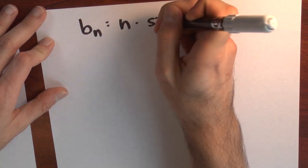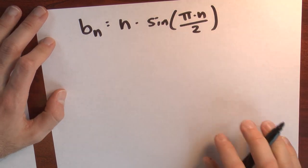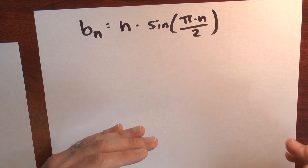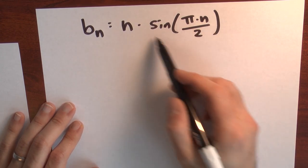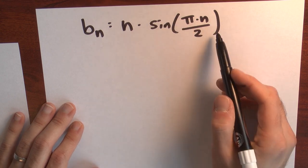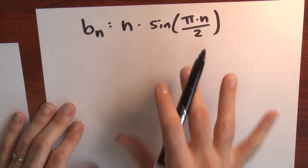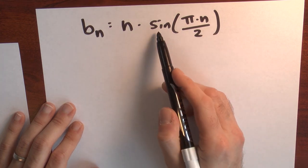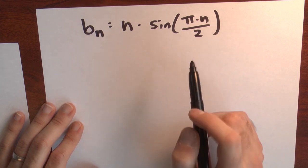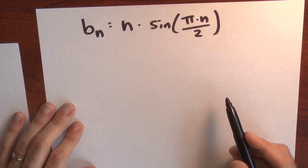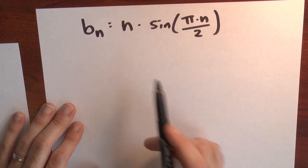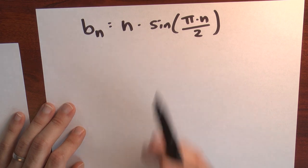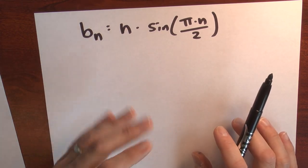Let's do another example. Let's look at the sequence b_n = n · sin(πn/2). Is this sequence bounded above, bounded below, bounded, or neither? Well, sin(πn/2) for integer n can be 0, 1, or −1. For very large n where sin(πn/2) = 1, b_n is just n times 1, which is n. For very large n where sin(πn/2) = −1, b_n is negative n. So this sequence isn't bounded above and it isn't bounded below — it's neither bounded above nor below.